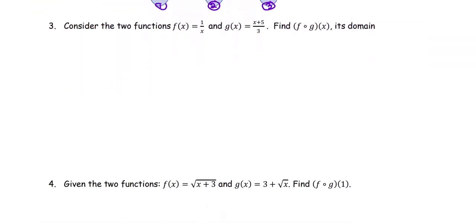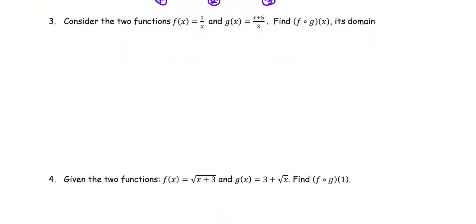Let's see the example. Consider the two functions f(x) = 1/x and g(x) = (x + 5)/3. We are going to find f∘g(x), or the composition of f and g, and then find its domain.